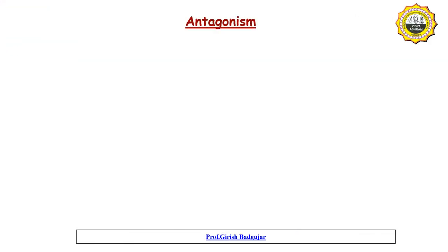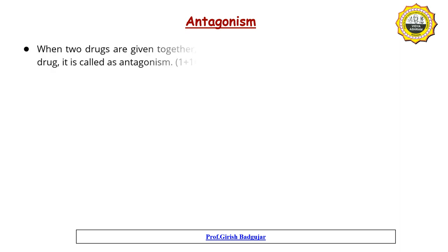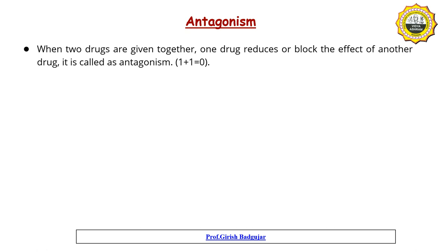So what is antagonism? When two drugs are given together, one drug reduces or blocks the effect of another drug — that process is called antagonism. One drug acts as an agonist while the second drug acts as an antagonist.